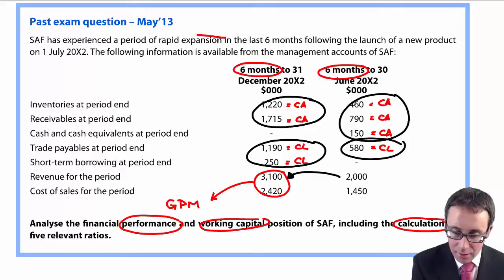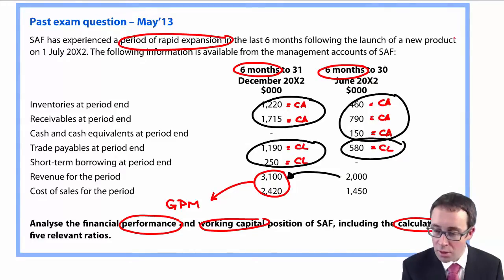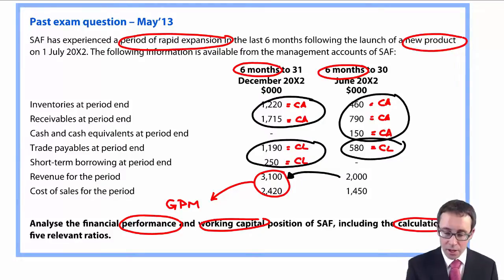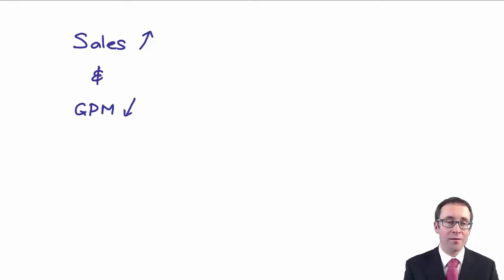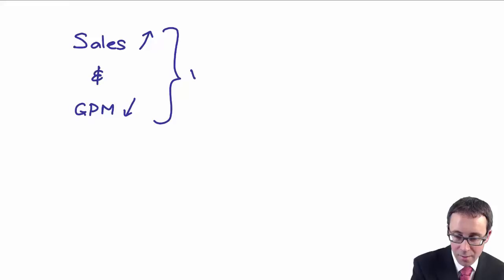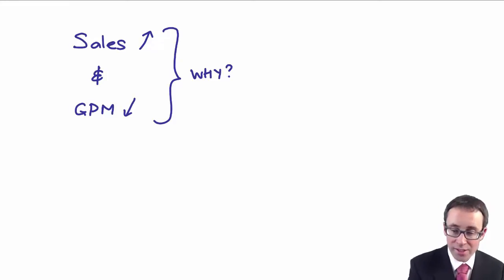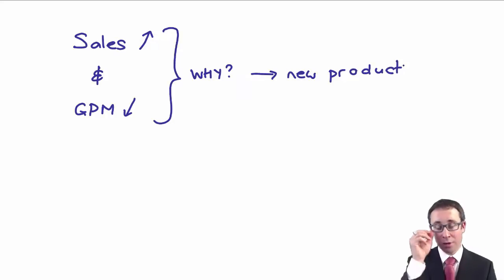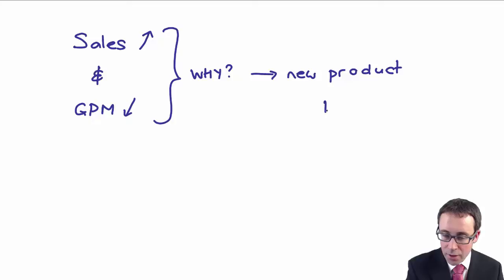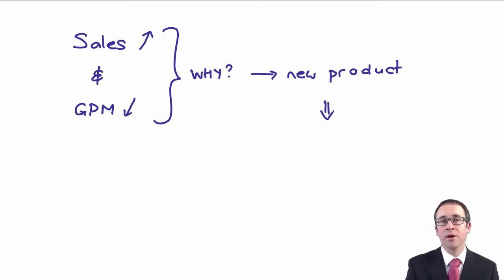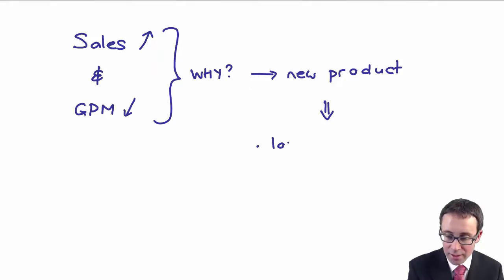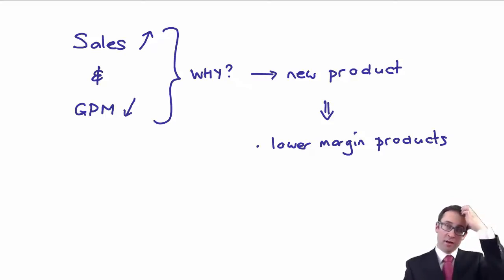Use the background information: there has been a period of rapid expansion in the last six months with the launch of a new product. You need to think about why the increase in sales has given you a reduction in gross profit margin. The increase in sales is because a new product was launched, which you'd expect.